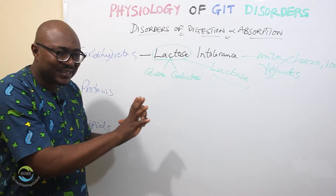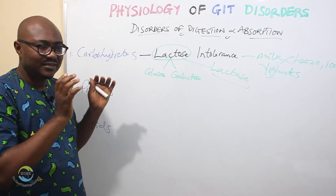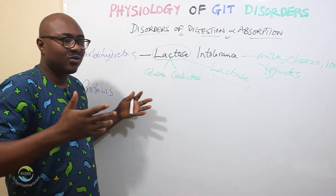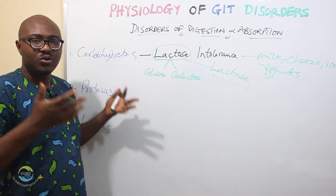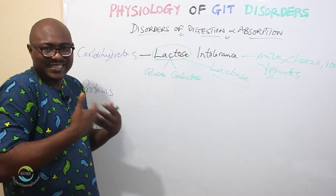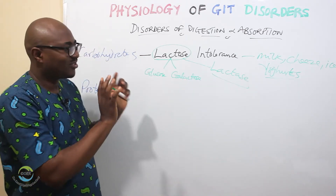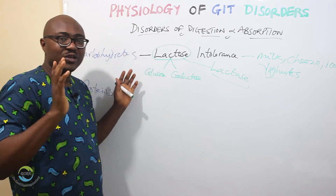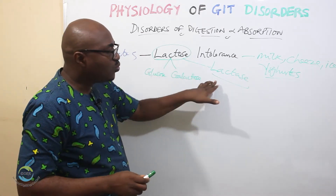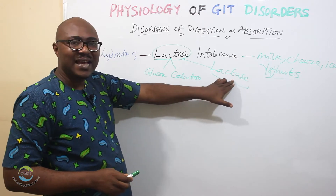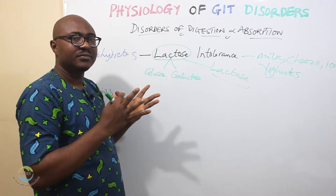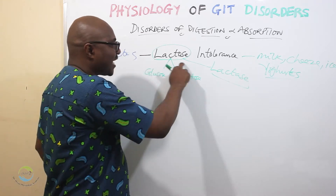After other animals are weaned from milk, they never desire it again — you can't see an adult goat or dog still trying to suck milk. So it's something peculiar to only humans. As adults, a lot of people lose some of their lactase, so they have difficulty in digesting lactose.